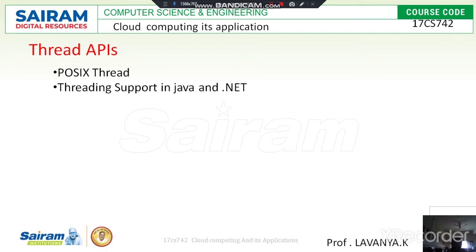POSIX thread: POSIX stands for Portable Operating System Interface for Unix. POSIX is a standard for application programming interfaces for the portable development of applications over the Unix operating system. POSIX is used for implementing threads and the functionality of particular applications or programs, and the standard is addressed for implementation on Unix-based operating systems.